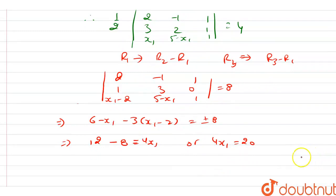Correction: this is positive 8, not negative. From 12 - 4x1 = ±8, we get 4x1 = 4 or 4x1 = 20, giving us x1 = 1 or x1 = 5.